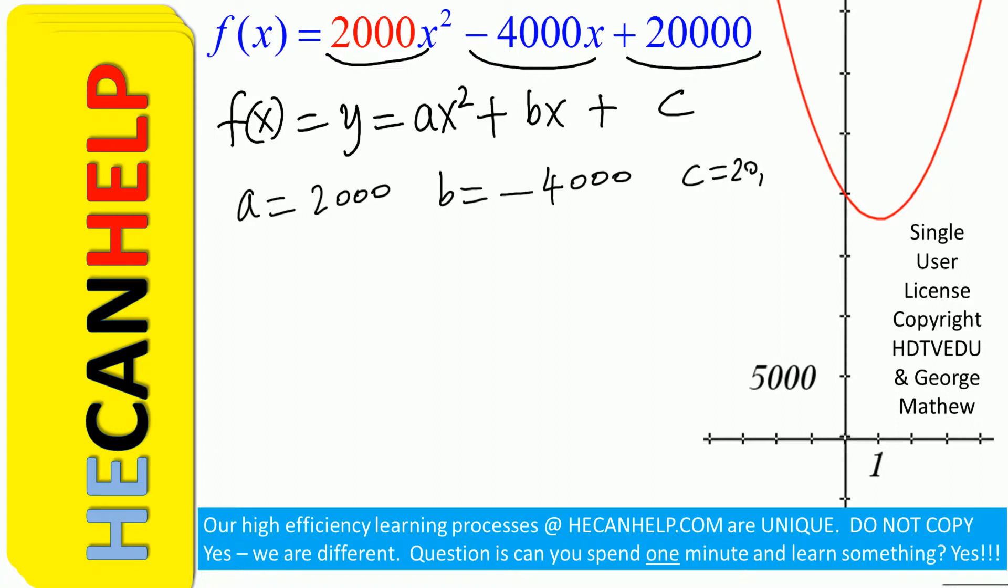c equals 20,000. The axis of symmetry is given by h equals negative b over 2a. So negative of b divided by 2 times a. What is b? Negative 4000. What is a? Just 2000.